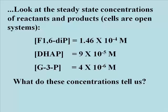Clearly, the overall product, glyceraldehyde 3-phosphate, is at much lower concentration than either fructose 1,6-diphosphate or dihydroxyacetone phosphate. Can you infer something from this?